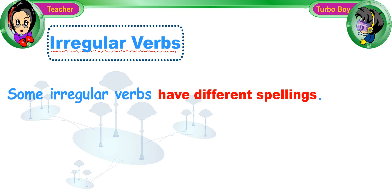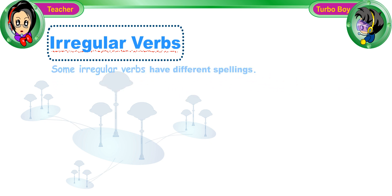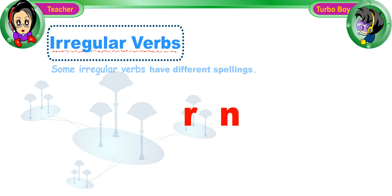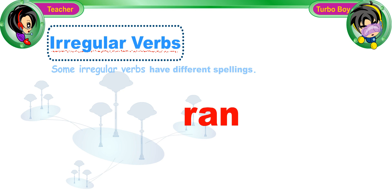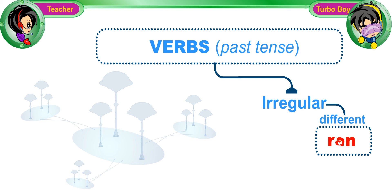There are also some irregular verbs that have different spellings when in the simple past forms. For example, the past tense of the verb eat is ate. And the past tense of the verb run is ran. I see — the past tense of these irregular verbs are written differently.